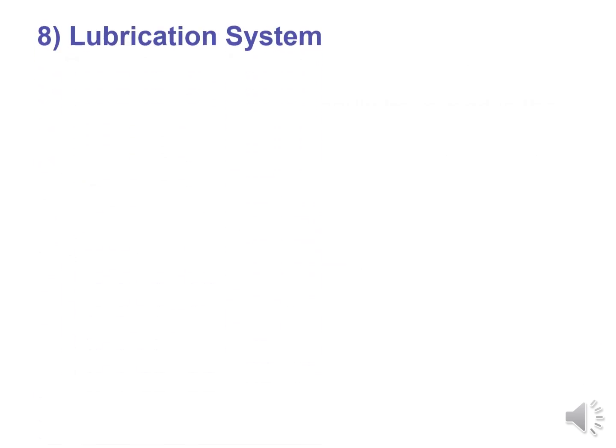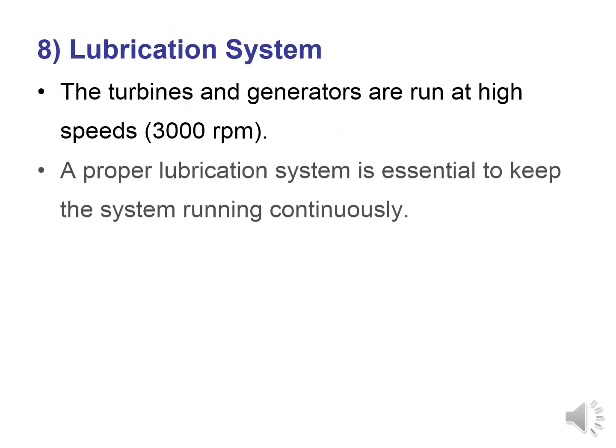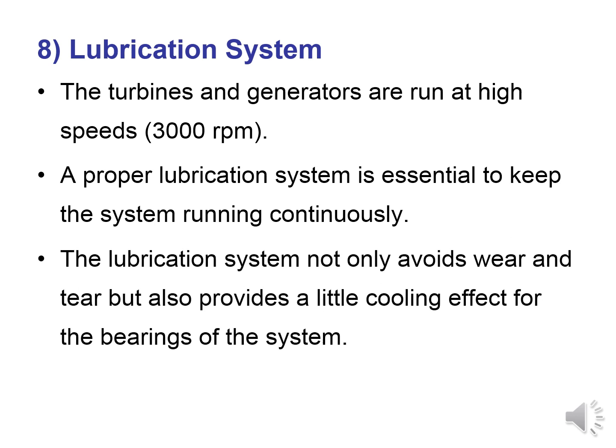The lubrication system is required because many parts will be moving, sliding, rotating, and oscillating, creating frictional forces. Turbines and generators run at high speeds, around 3000 RPM, so a proper lubrication system is essential. The lubrication system not only avoids wear and tear but also provides a cooling effect for the bearings.